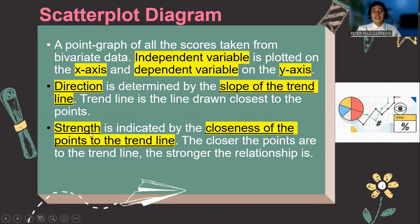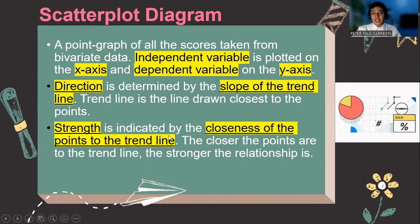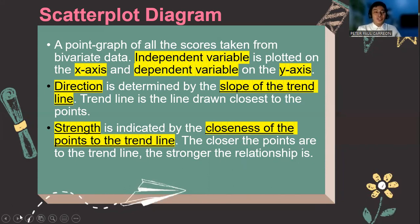For the strength, the strength is indicated by the closeness of the points to the trend line. So the closer the points are to the trend line, the stronger the relationship is.